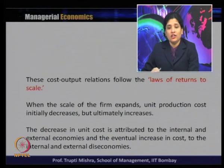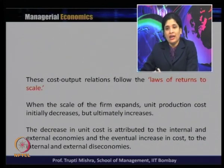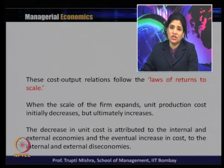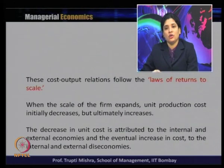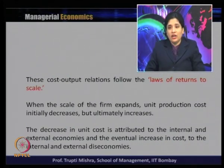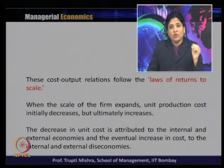When the scale of the firm expands, unit production cost initially decreases but ultimately increases. The decrease in unit cost — the average cost — is attributed to internal and external economies of scale. Beyond the minimum cost of production, the unit production cost increases. The eventual increase in cost is due to diseconomies, which are again of two types: internal diseconomies and external diseconomies.